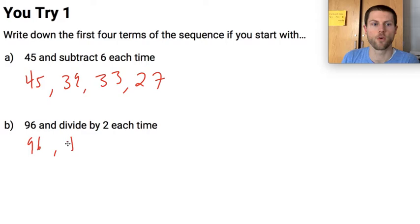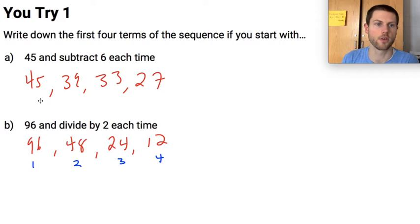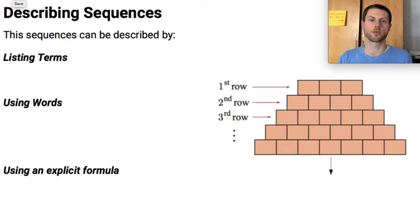96 and then divide by 2. So this would be 96. Then we'd have divide by 2 would be 48 and then 24 and then 12. And for consistency's sake, I'm just going to list when these numbers appear in the list, in the sequence: 1, 2, 3, 4.